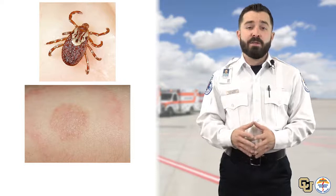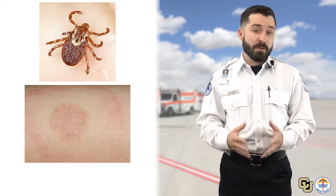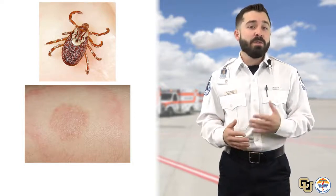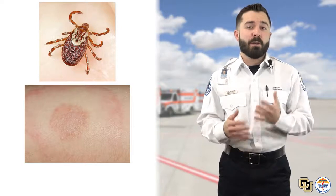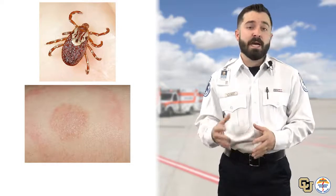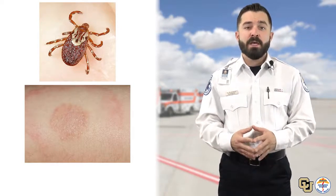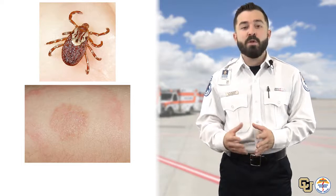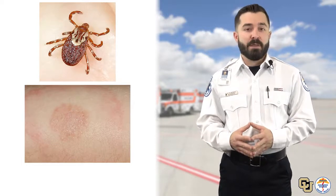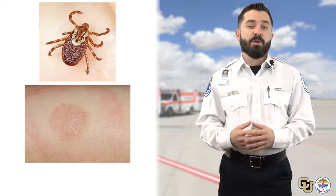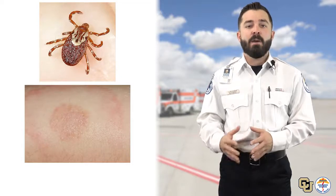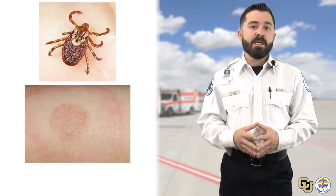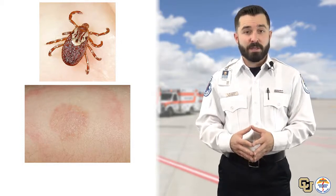However, not all pathogens are communicable. For example, Lyme disease is a blood-borne pathogen, but is only spread through contact with a specific species of tick, and cannot be transmitted from human to human. This is known as a vector-borne disease. A communicable disease, on the other hand, is a disease that may be spread from person-to-person contact. Common communicable pathogens and their corresponding PPE is covered in your required reading for this week.